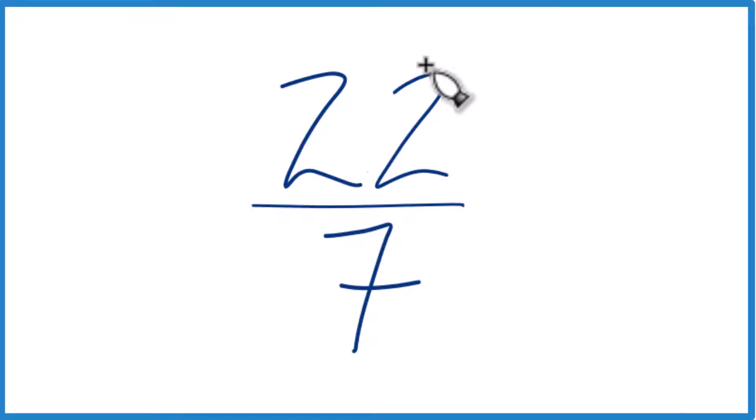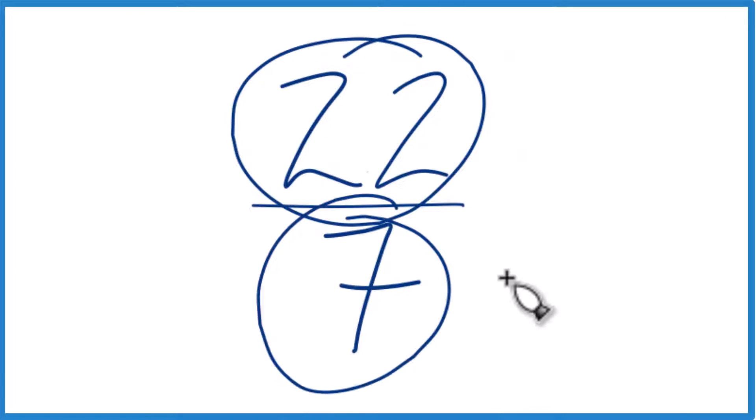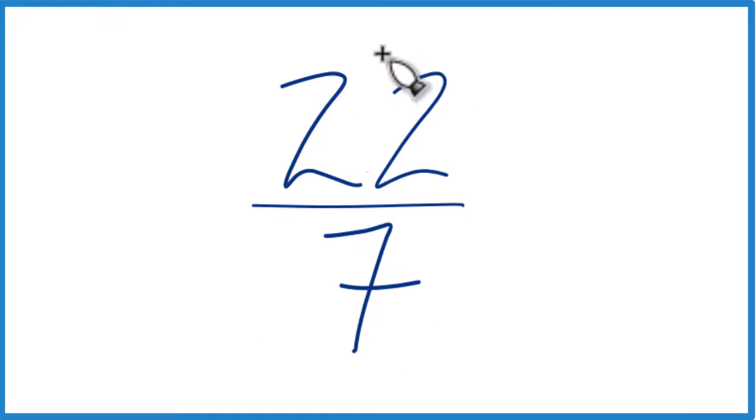So let's write the fraction 22 sevenths as a mixed number. Right now it's an improper fraction. That's because the numerator, 22, is bigger than our denominator, 7 here.